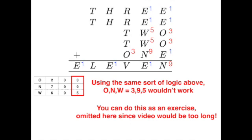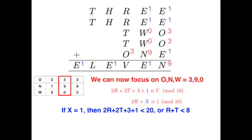You can follow exactly the same ideas above to see that 3, 9, 5 for O, N and W wouldn't work as well. We will not show this, as this is the same process as before, and doesn't add anything new. Not to mention, the video would also be too long. You can do this as an exercise, however, if you are interested. So O, N and W equals 3, 9 and 0 is the correct one to pick, and from here, we will go on and deduce the other numbers in the cryptogram.